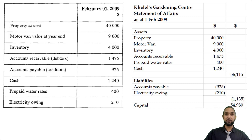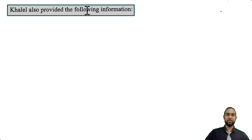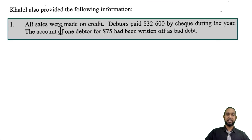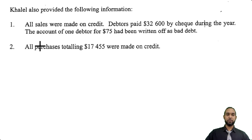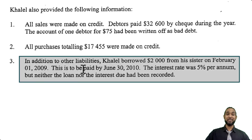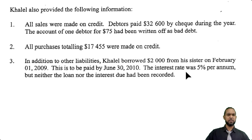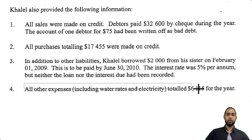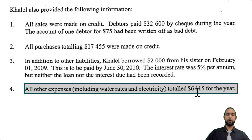Let's take a look at some more information from this question. Kalel also provided the following information. First, all sales were made on credit. Debtors paid $32,600 by check during the year. The account of one debtor for $75 had been written off as bad. Next, all purchases totaling $17,455 were made on credit. Third, Kalel borrowed $2,000 from his sister on February 1, 2009, to be paid by June 30, 2010. The interest rate was 5% per annum, but neither the loan nor the interest due had been recorded. Last, all other expenses including water rates and electricity total $6,115 for the year.